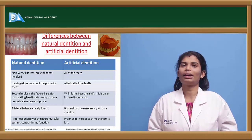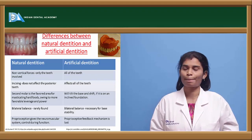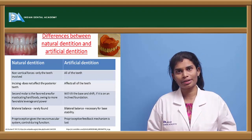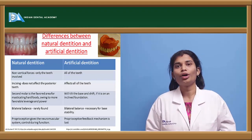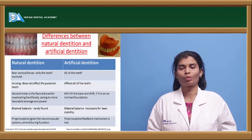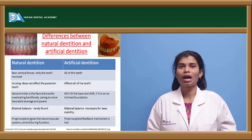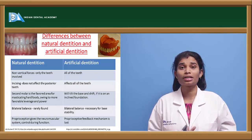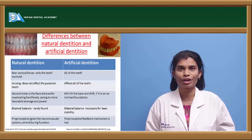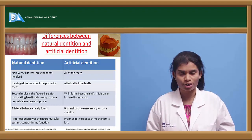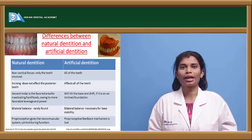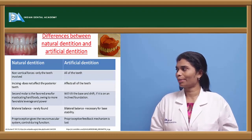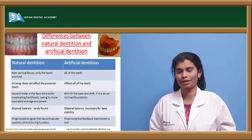Bilateral balanced occlusion is a must in case of artificial dentition for denture stability, whereas in natural dentition, bilateral balance is not really necessary. In natural dentition, proprioception is a major mechanism that controls the neuromuscular control of the teeth. But in artificial dentition, after teeth are extracted, the periodontal ligament — which has the sensory function — is lost. So there will be a problem with sensory input, and the proprioceptive feedback mechanism is lost in artificial dentition.